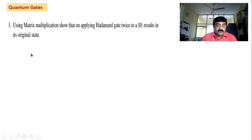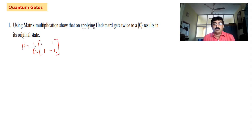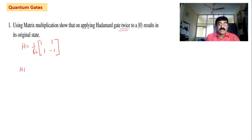First we consider the Hadamard gate. The matrix format of the Hadamard gate H is equal to 1/√2 times the matrix [1, 1; 1, -1]. The Hadamard gate is also called a transformation matrix. Now we multiply H by H again — that is, applying the Hadamard gate twice. So H×H equals 1/√2 × [1, 1; 1, -1] multiplied again by 1/√2 × [1, 1; 1, -1].